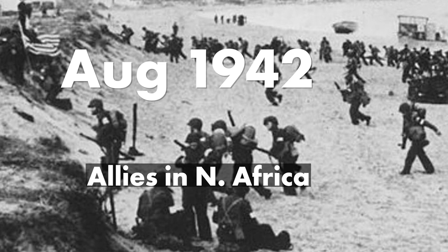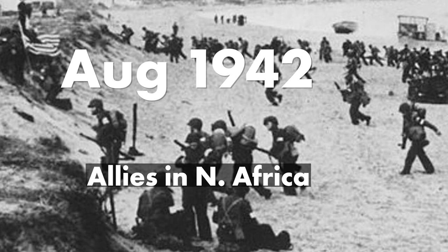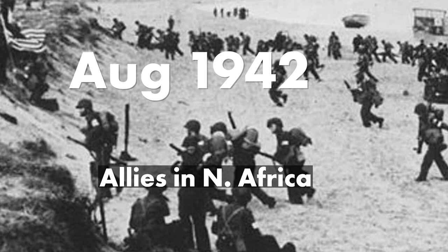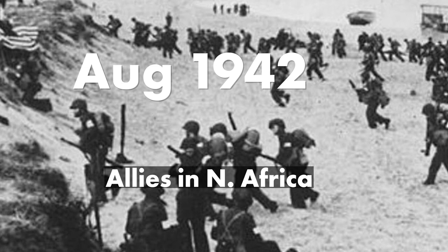In August 1942, the Allies in North Africa: General Alexander was given a handwritten directive from Churchill ordering that his main directive was the destruction of the German-Italian army commanded by Field Marshal Rommel, together with all its supplies and establishments in Egypt and Libya. As soon as sufficient material had been built up, Alexander handed the campaign over to General Montgomery.